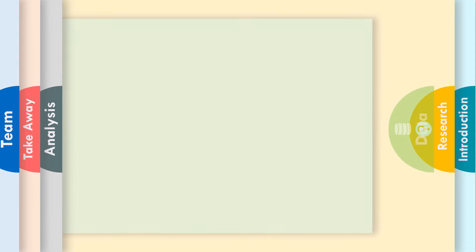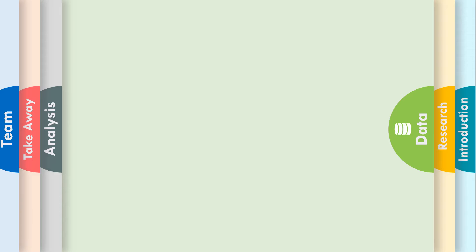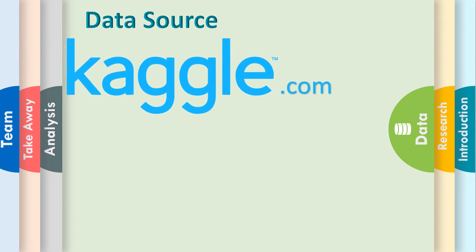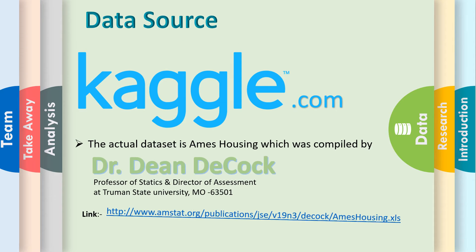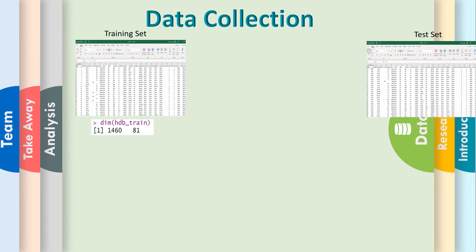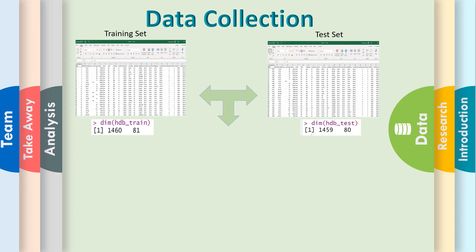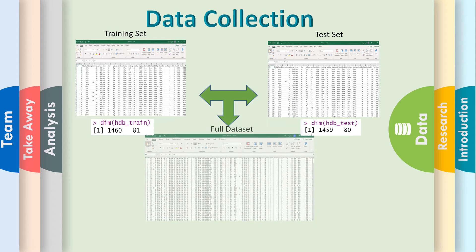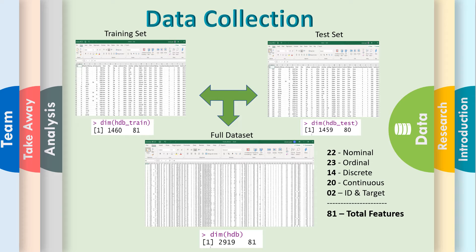Our data source is Craigslist.com and the link is here. For data collection, we got separate training and test sets and merged them into a single dataset. As you can notice, our dataset has 81 features.